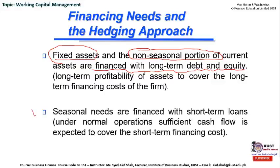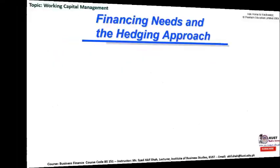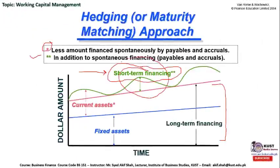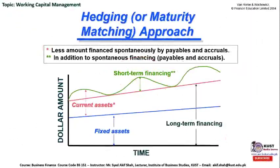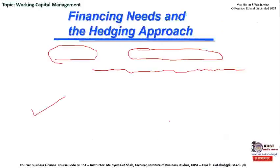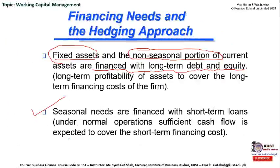The seasonal needs — represented by the jumps in the graph showing an increase in the level of current assets — are known as seasonal requirements. These seasonal needs are financed with short-term loans because the season will be over in three or six months, and then the company will not need that financing. The company returns the principal along with interest to the depository institution. Under normal operations, sufficient cash flow is expected to cover the short-term financing cost, and therefore seasonal needs are financed with short-term financing.